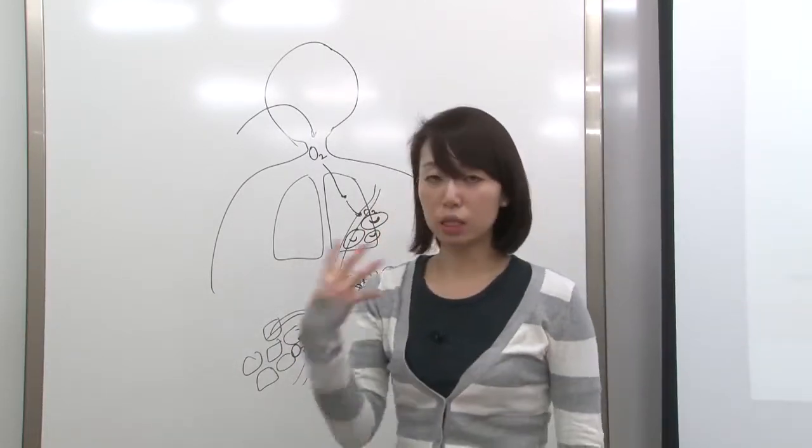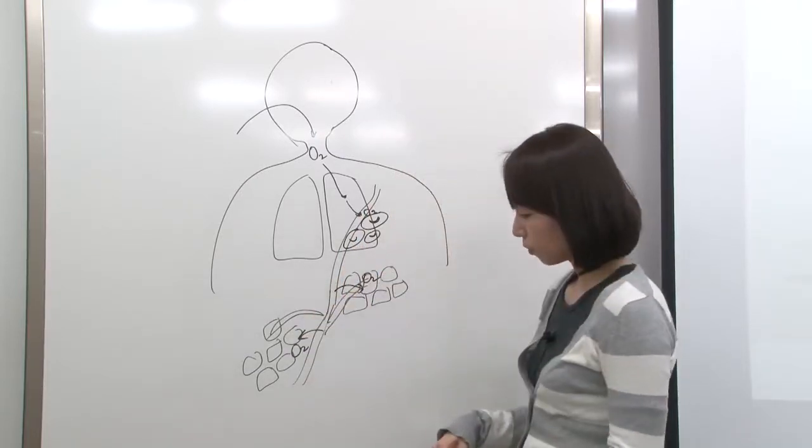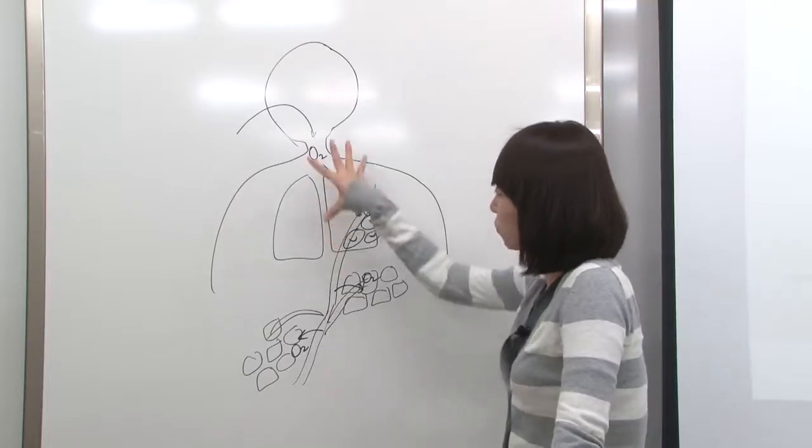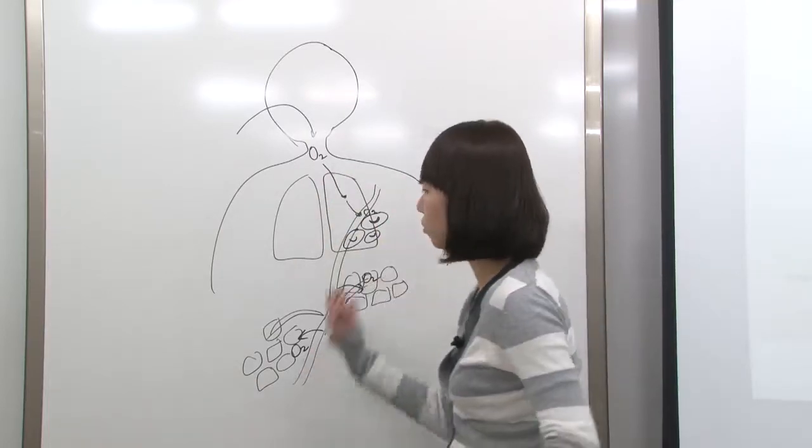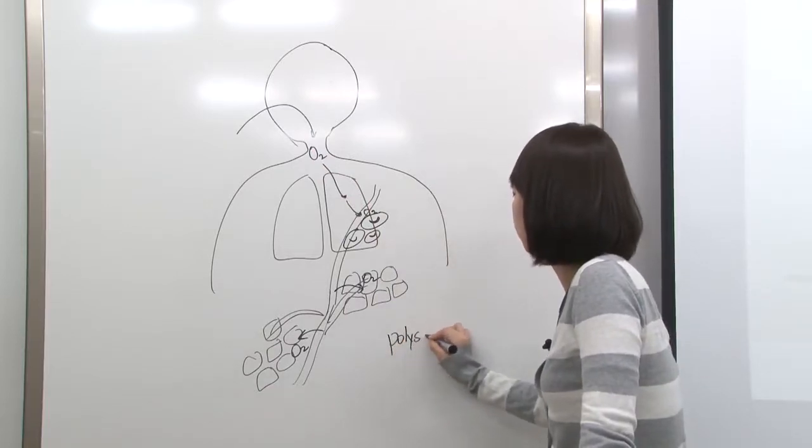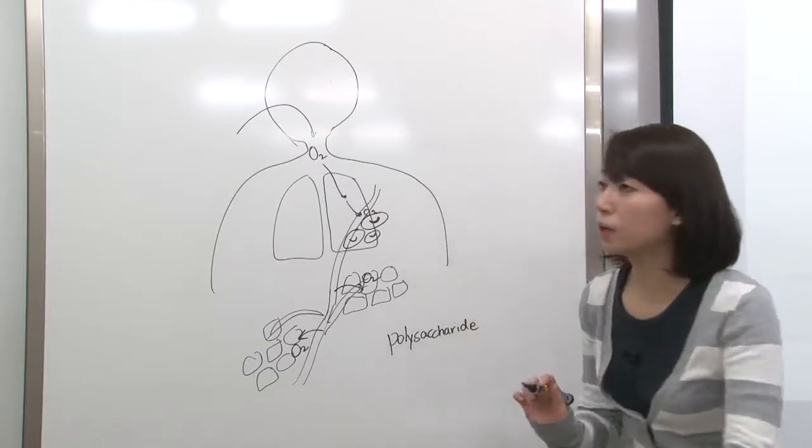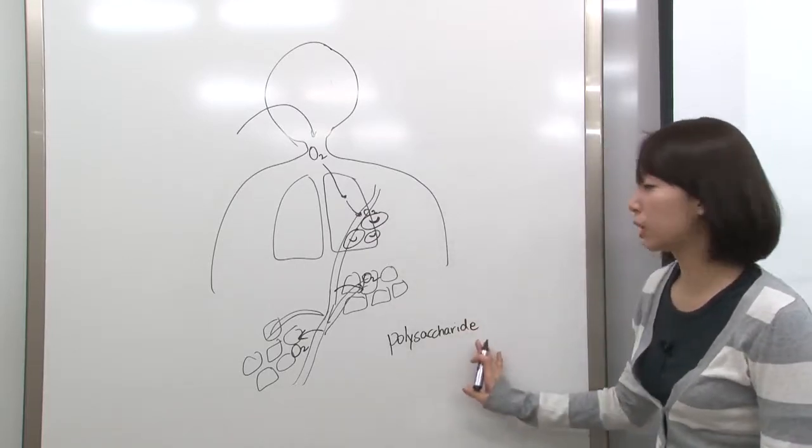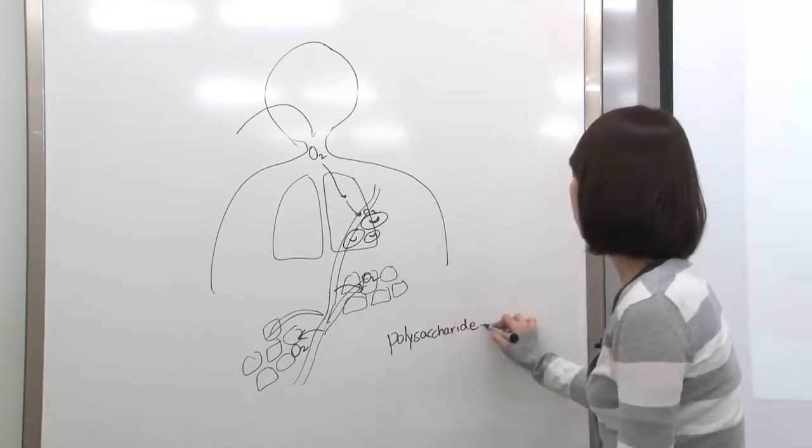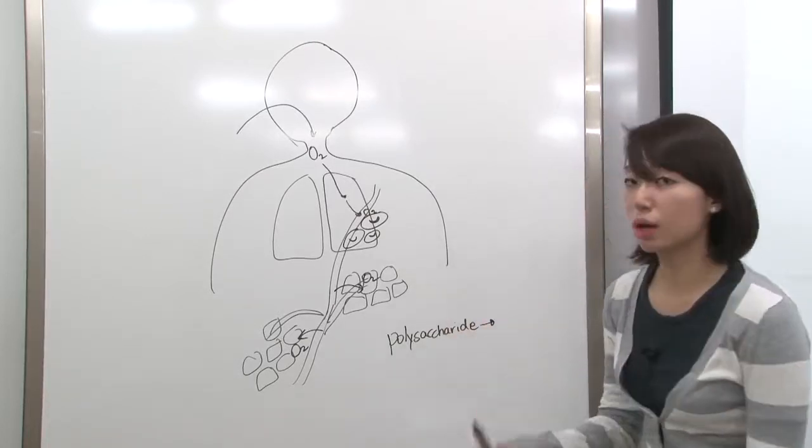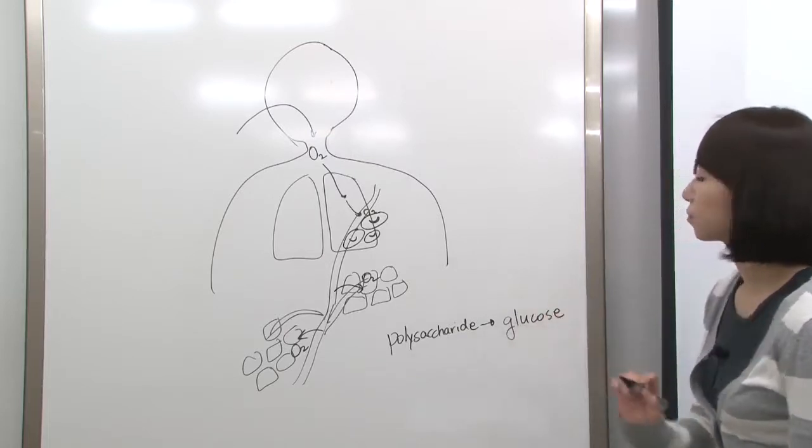Also, we eat food. If we eat food, then those foods are going to be broken down into smaller molecules. What we eat is polysaccharides. When we break this down, breaking down occurs in the digestive system, and we break this down into monosaccharide, which is usually glucose.